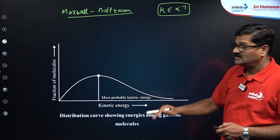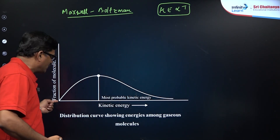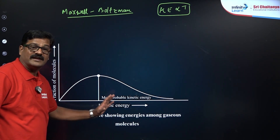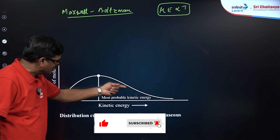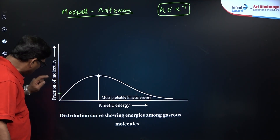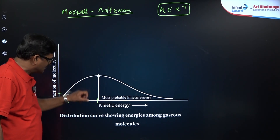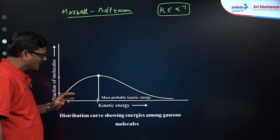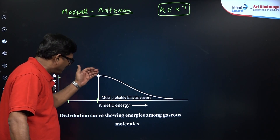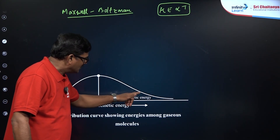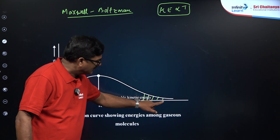As temperature increases, kinetic energy increases. If you take a graph between the fraction of molecules and their energies, you get a curve that rises to a peak and comes down. At low temperatures, the fraction of molecules with high energy is very less. At moderate temperature, the fraction is higher. As temperature increases further, the fraction of molecules with high kinetic energy increases.